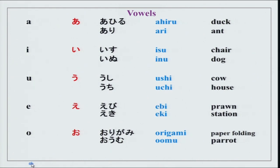Now we will do the vowels very quickly and give you some vocabulary — you can repeat after me. The vowel series: ahiru, ari, isu, inu, ushi, uchi, ebi, eki, origami, oumu. The meanings are given in black and in Roman script so you can read and learn them.